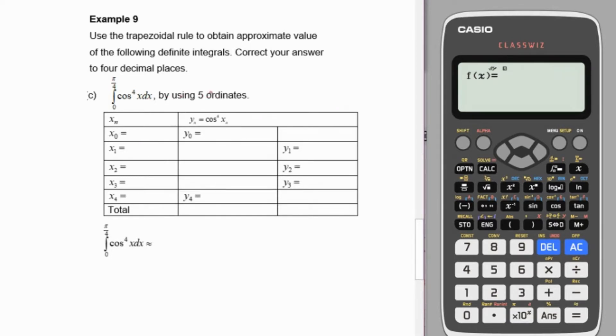When we have 5 ordinates, we'll have 4 strips of trapezium. So with ordinates 1, 2, 3, 4, 5, the number of trapezium n will equal 4.